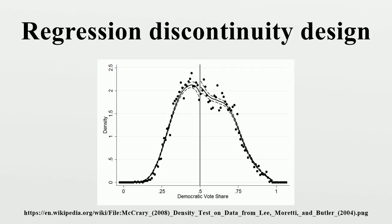By comparing observations lying closely on either side of the threshold, it is possible to estimate the local average treatment effect in environments in which randomization was unfeasible, first applied by Donald Thistlethwaite and Donald Campbell to the evaluation of scholarship programs. The RDD has become increasingly popular in recent years.